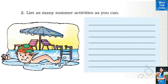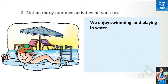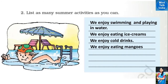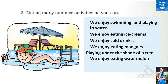Next in your textbook is: List as many summer activities as you can. In summer when we feel very hot, we enjoy all cold things. We enjoy swimming and playing in water, eating ice creams, drinking cold drinks, eating mangoes, playing under the shade of a tree, and eating watermelon. You may add other activities you enjoy.